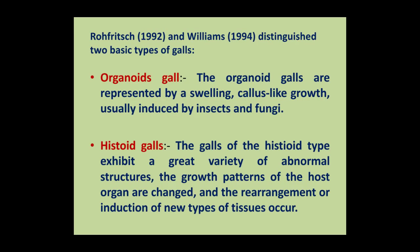Rofricks and Williams distinguish two basic types of plant galls on the basis of structural organization. These galls are organoid galls and histoid galls. The organoid galls are represented by a swelling, callus-like growth which is usually induced by insects and fungi.